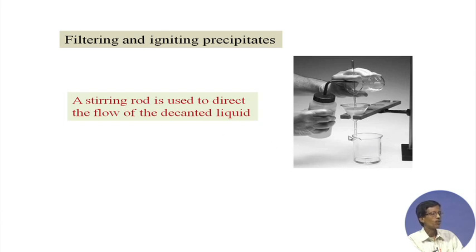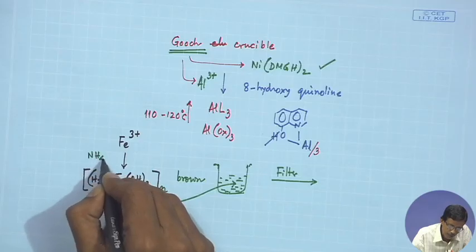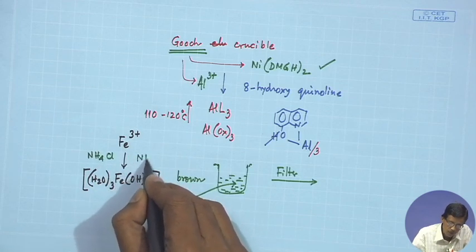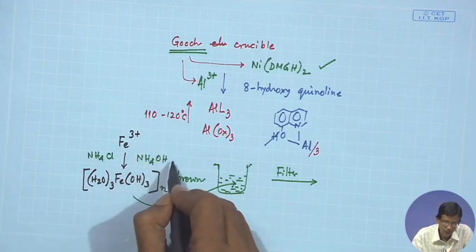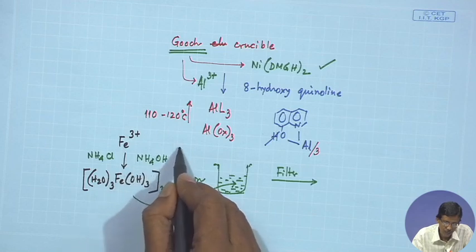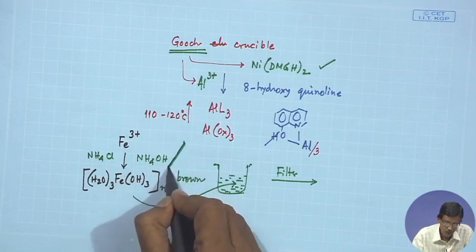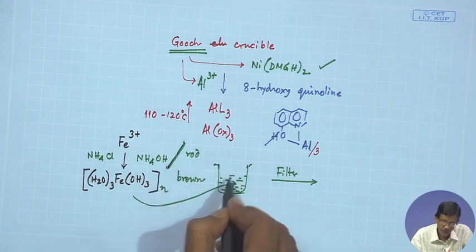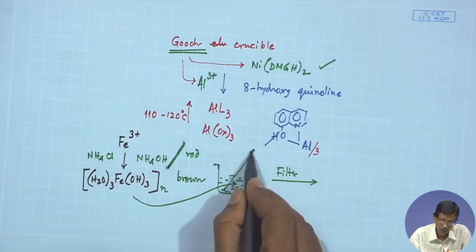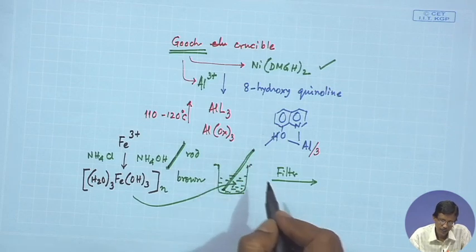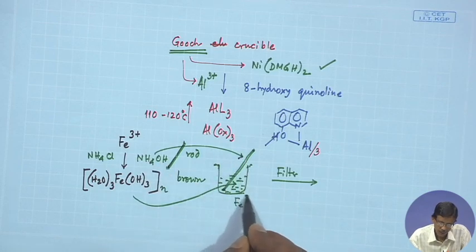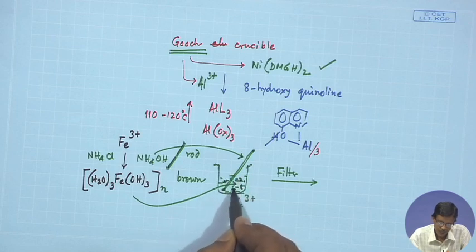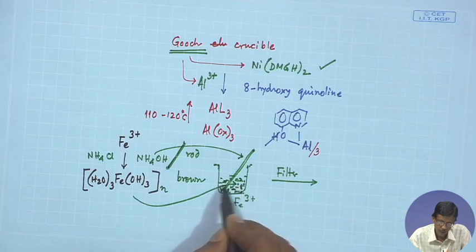The glass rod is useful for transferring the reagent — for example, you can use solid ammonium chloride, or ammonium hydroxide which is a liquid. Drop-by-drop addition of ammonium hydroxide can be done through the side of the stirring rod inside the beaker. You transfer this drop by drop into the ferric solution Fe³⁺ and observe the corresponding precipitate formation.